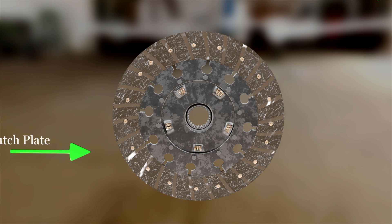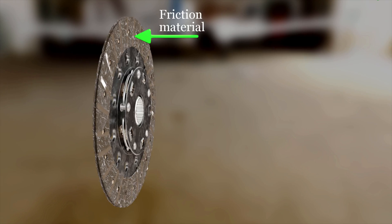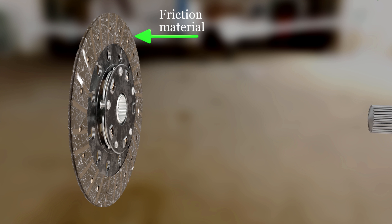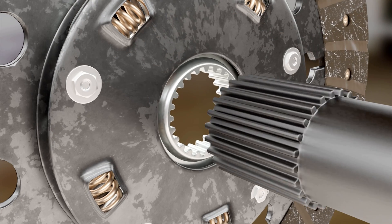Then there is a clutch plate made up of steel and faced on both sides with friction material. The clutch plate is mounted on the spline shaft and can move along the axis of the shaft.